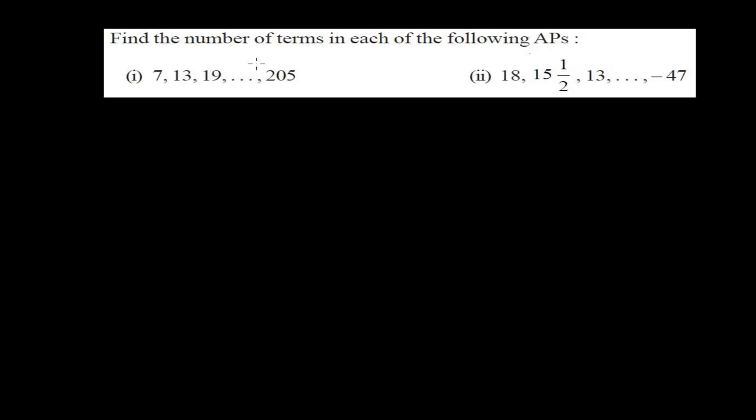Welcome friends, once again to another episode on arithmetic progression. In this question we are going to find out the total number of terms in the arithmetic progression. The first AP is 7, 13, 19, ... up to 205, and the second AP is 18, 15½, 13, ... up to -47. In both cases we need to find out the total number of terms — the value of n.